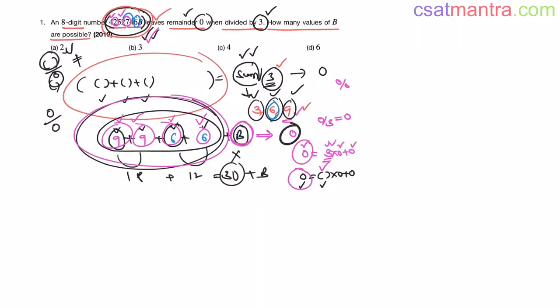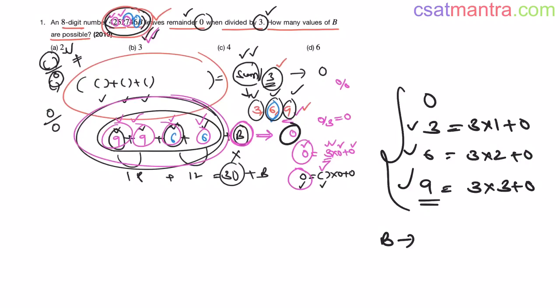Now other than 0 we can have 3, because 3 is divisible by 3. 3 into 1 plus 0. 6, 3 into 2 plus 0. 9, 3 into 3 plus 0. You cannot have more than this because anything greater than 9 will be a two-digit number, but B is single digit number. So 0, 3, 6, 9. There are 4 possible values of B. So our answer is C. Very easy question. You may expect similar questions this year. I request you to kindly know all the divisibility rules. We have solved various problems. Go through them.